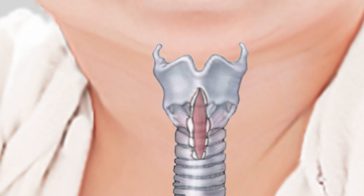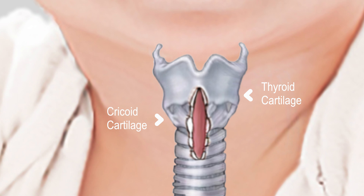It requires a single midline vertical incision extending through the inferior thyroid cartilage, and downwards through the cricoid cartilage, and the upper two tracheal rings.